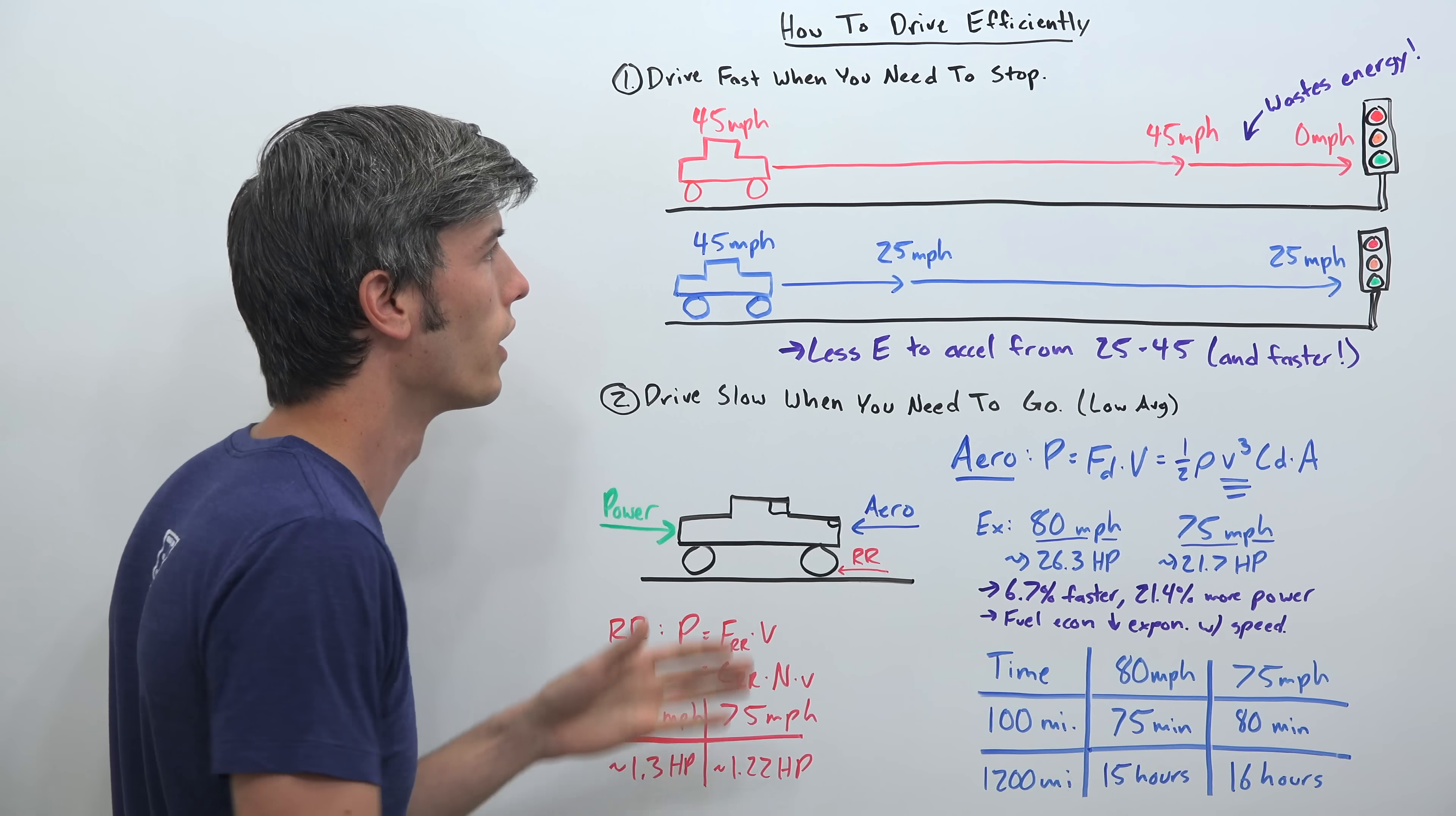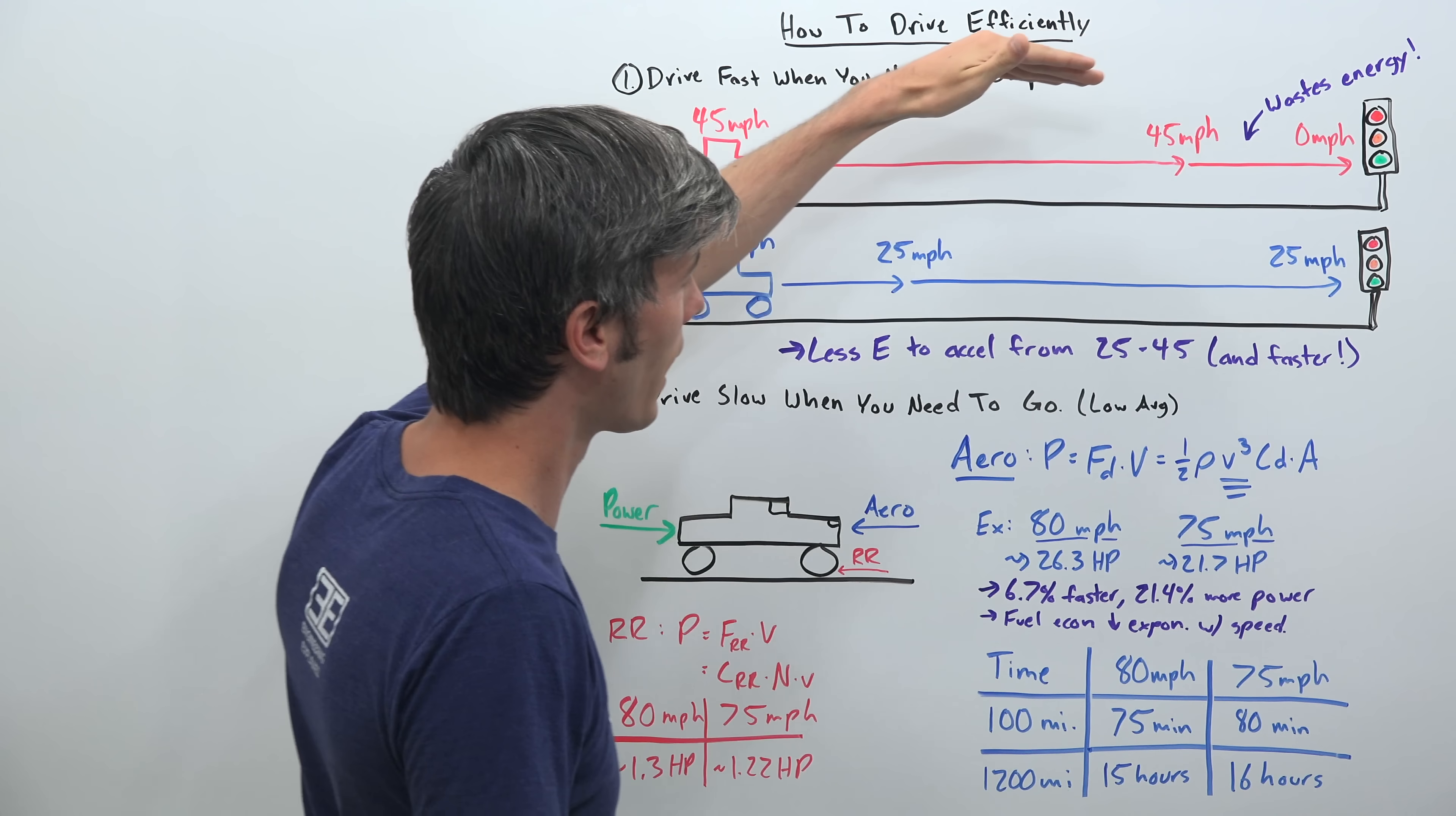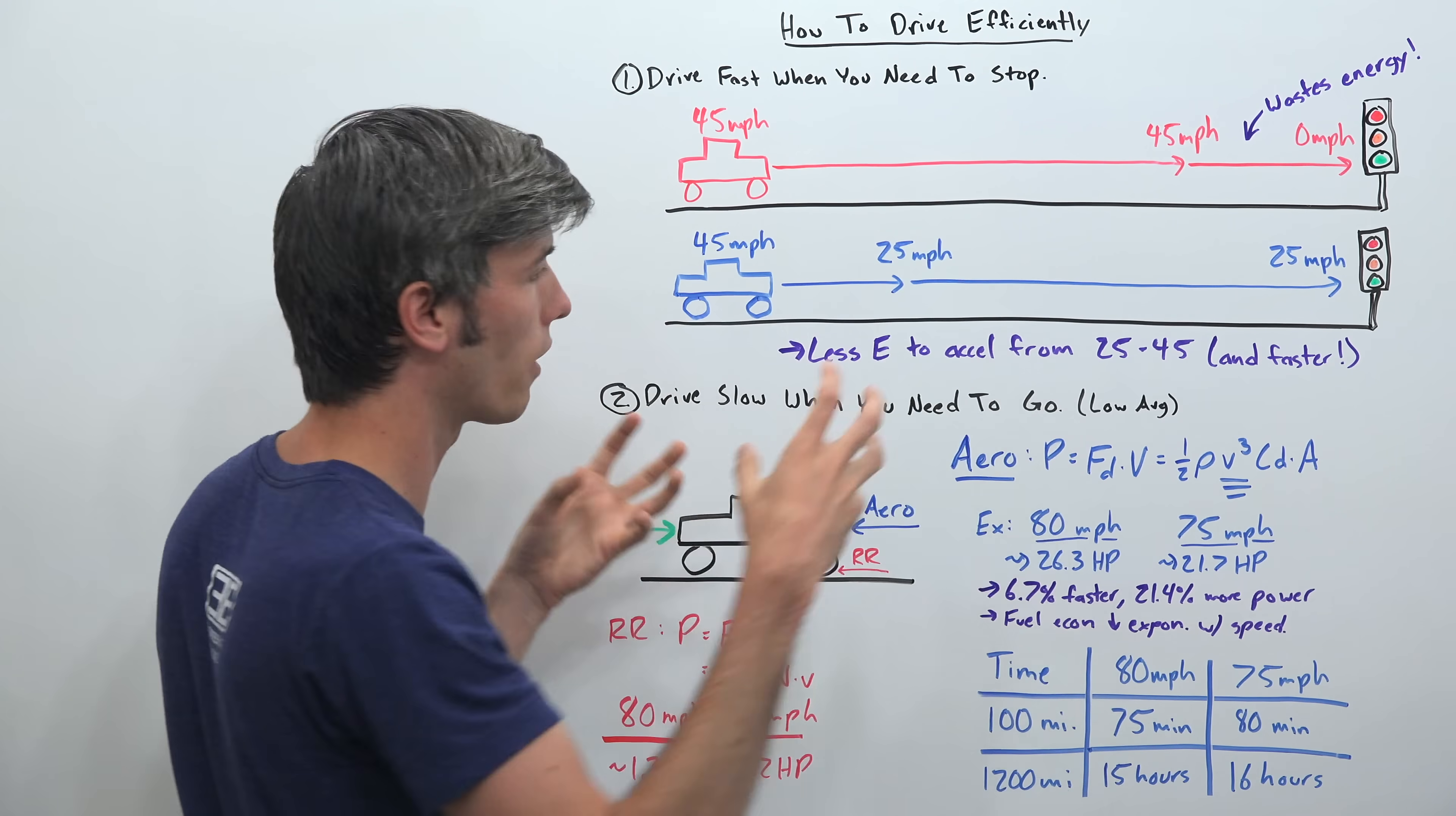Let's say you have a stoplight coming up. There's two different ways here where we're approaching this. So the first car, it's driving along at 45 miles per hour. It maintains that 45 miles per hour up until it starts to get pretty close to that stoplight. And then it drops down to zero miles per hour and sits there in that stoplight and waits for it to turn green.